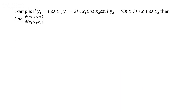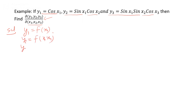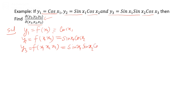Example: suppose y1 = cos(x1), y2 = sin(x1)cos(x2), and y3 = sin(x1)sin(x2)cos(x3). We have to find the Jacobian of y1, y2, y3 with respect to x1, x2, x3. Notice that y1 is a function of x1 only, y2 is a function of x1 and x2, and y3 is a function of x1, x2, and x3.